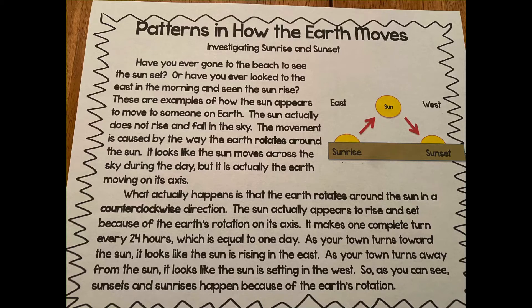The sun actually does not rise and fall in the sky. The movement is caused by the way the earth rotates around the sun. It looks like the sun moves across the sky during the day, but it is actually the earth moving on its axis.